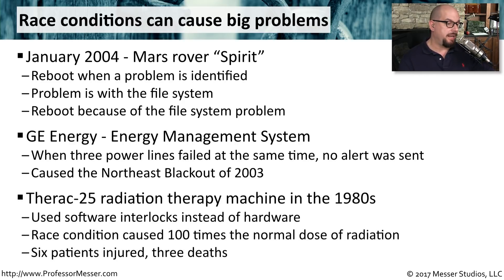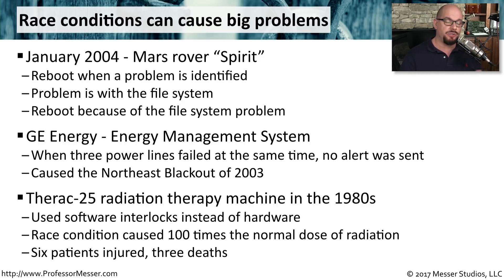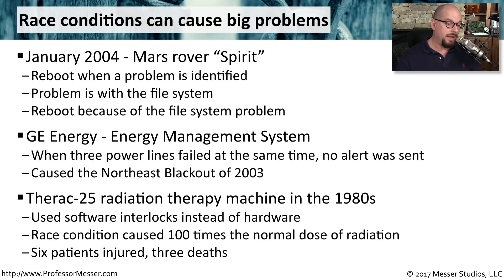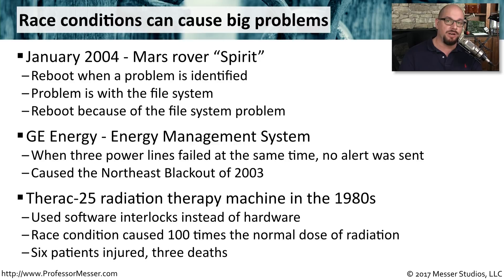A race condition in a radiation therapy machine in the 1980s was deadly. The operators of these therapy machines were very quick, and the software was not prepared for how fast these changes were being made. The software interlocks in these systems ran into a race condition and did not put the proper precautions in place. Some people received 100 times the normal dose of radiation. Unfortunately, six patients were injured and there were three deaths — just because of a software race condition.